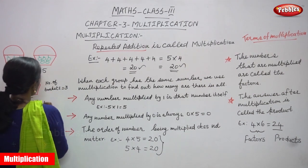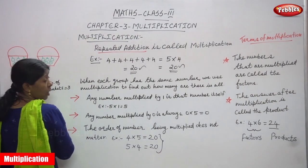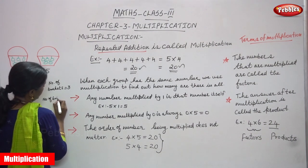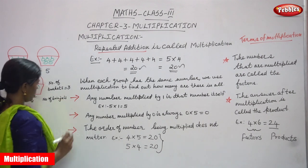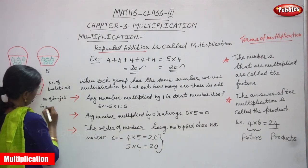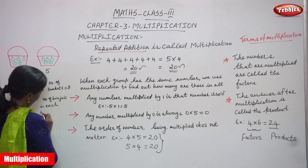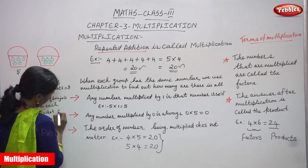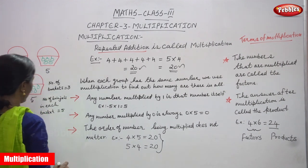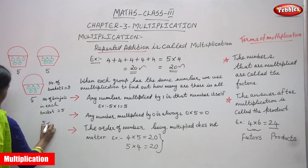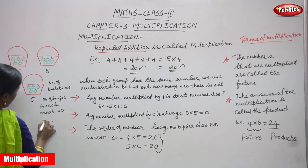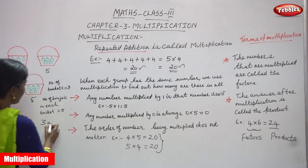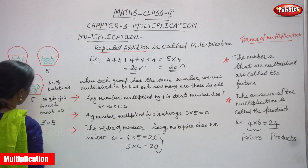In each basket, how many brinjals? Number of brinjals in each basket — that is 5. That means you have to multiply 5 into 3. There are 3 baskets. How many brinjals in each basket? 5 brinjals.